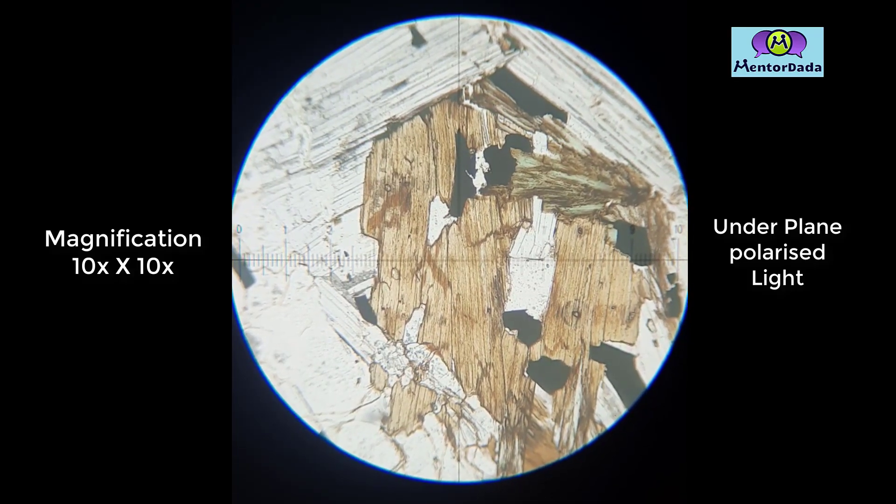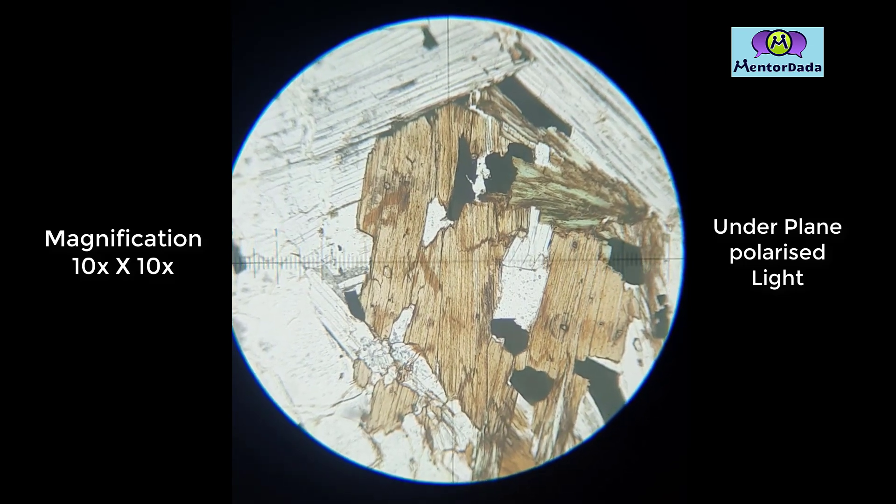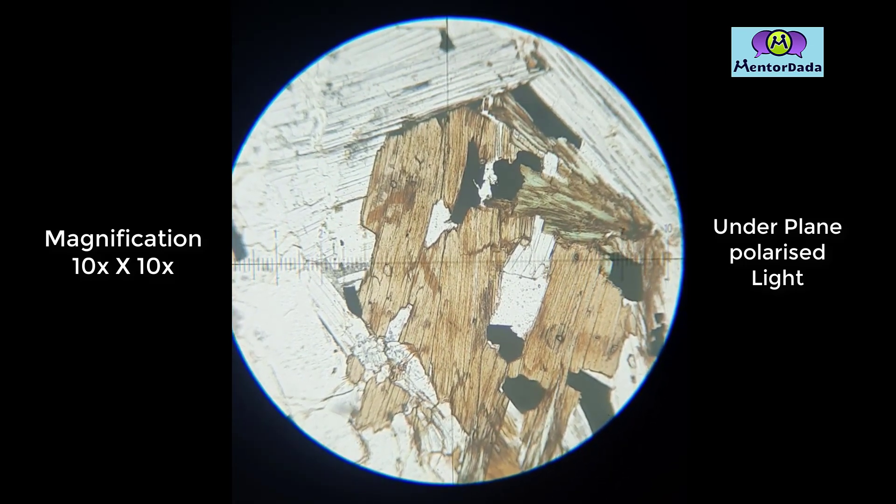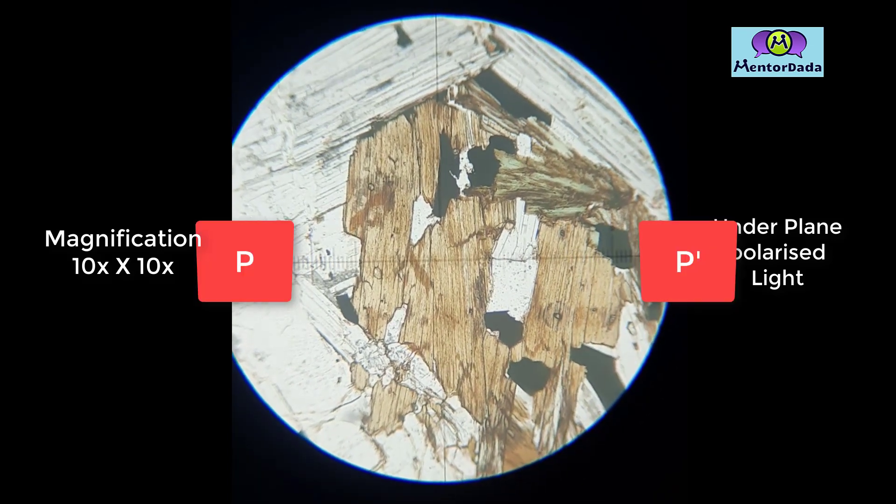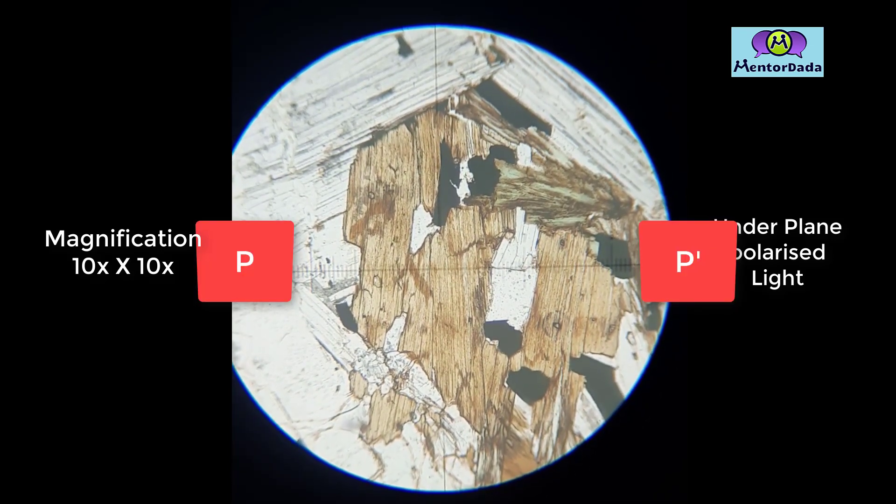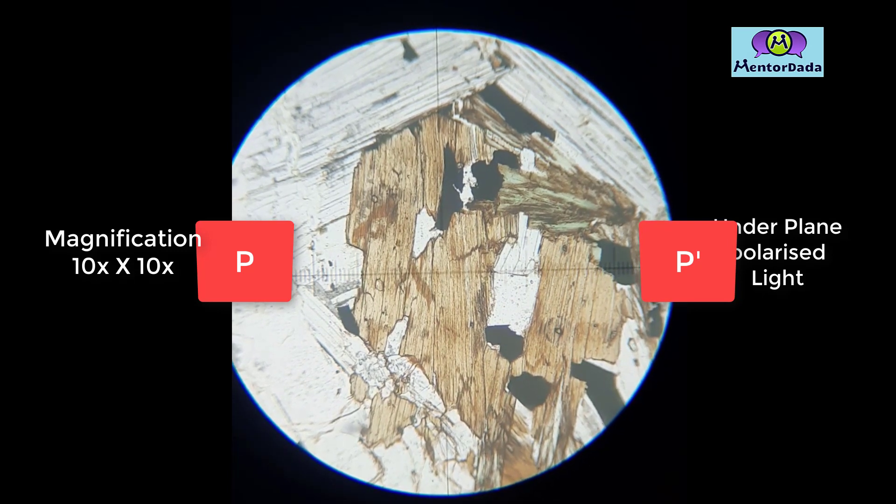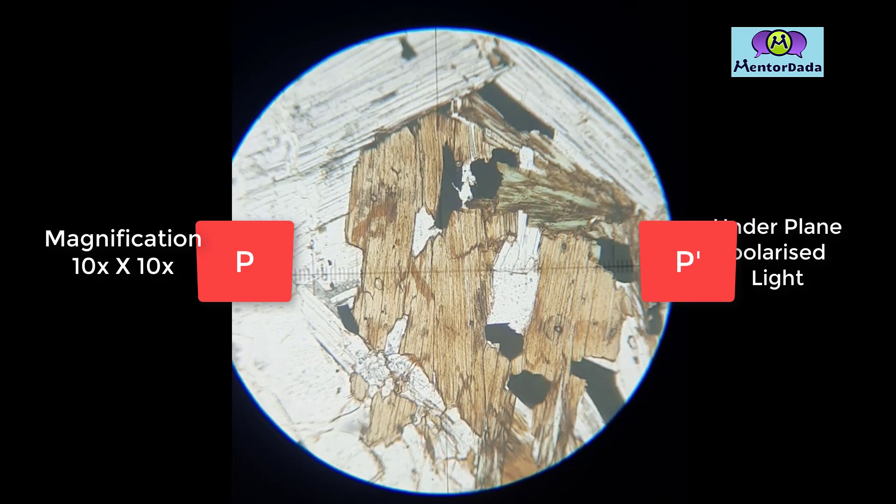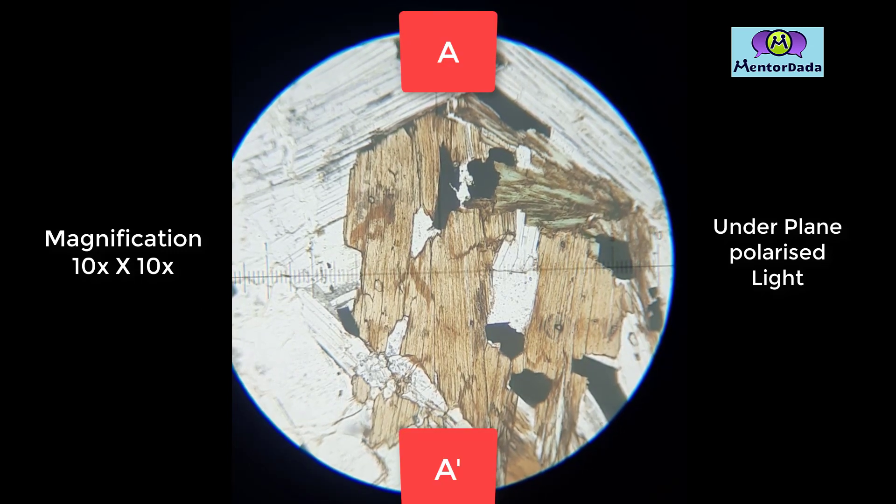Now here we are observing the mineral under plane polarized light. The analyzer is not yet inserted. While you are observing this mineral, take into account that the vibration direction of the polarizer, that is p p dash, is in the left-right direction, while the analyzer when it is inserted is in the up-down direction.